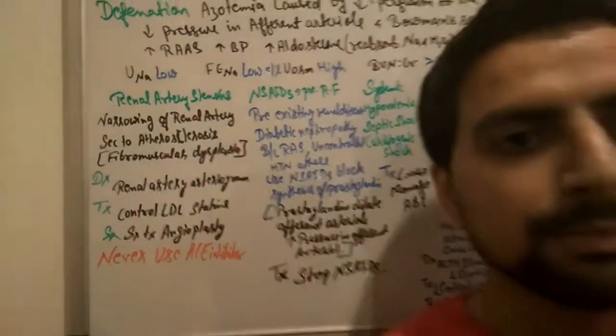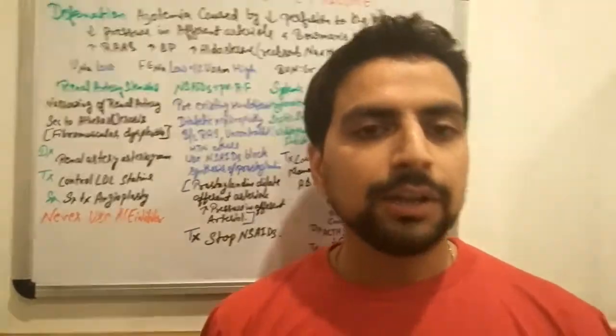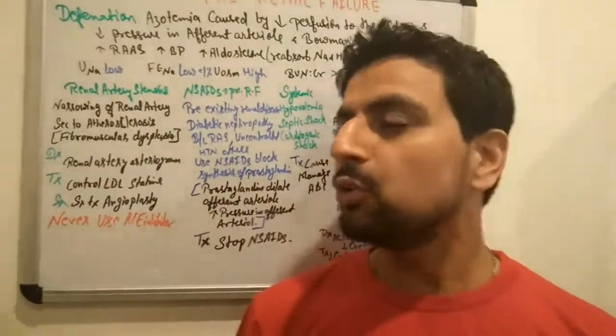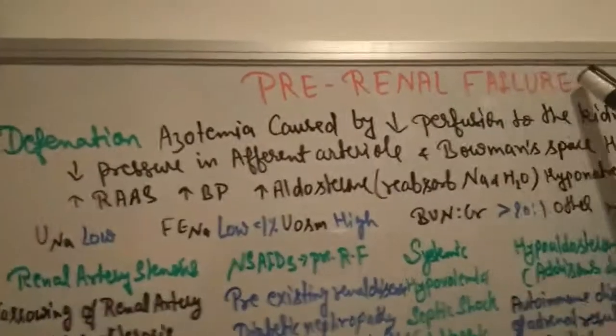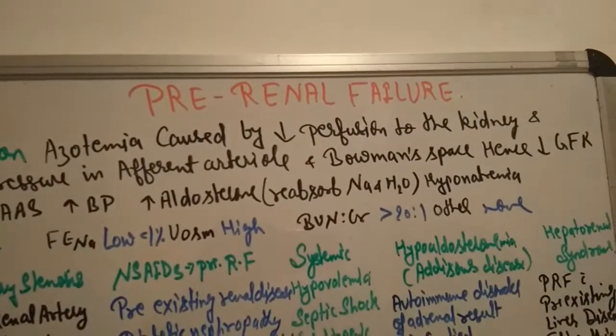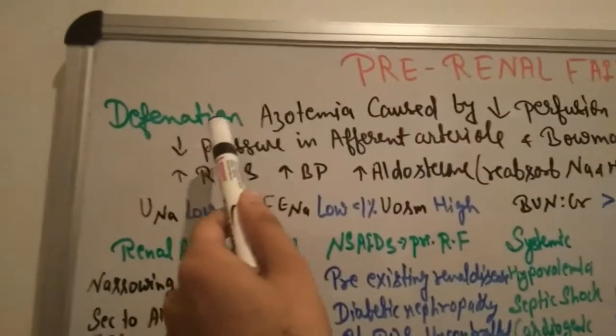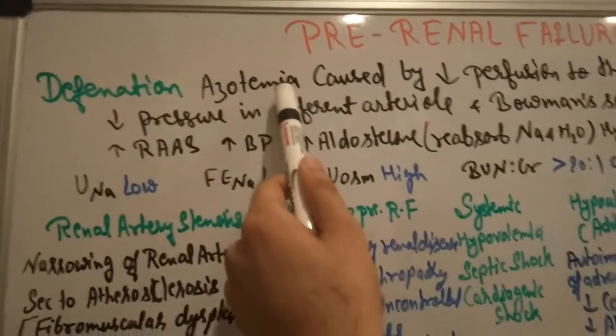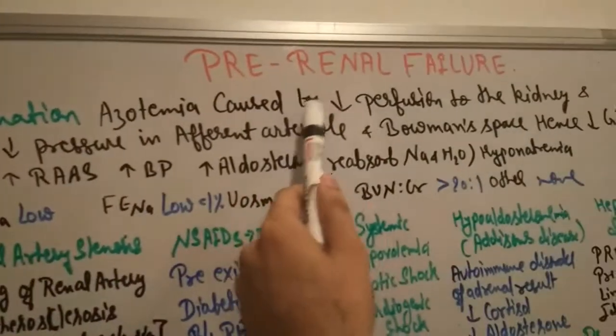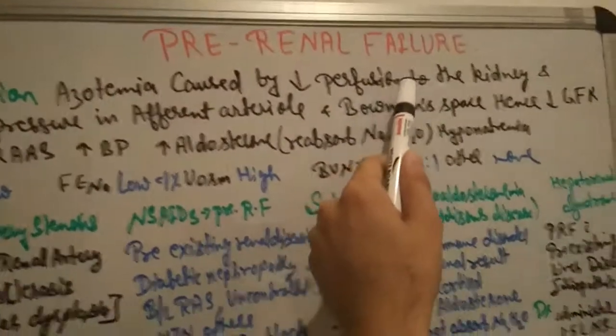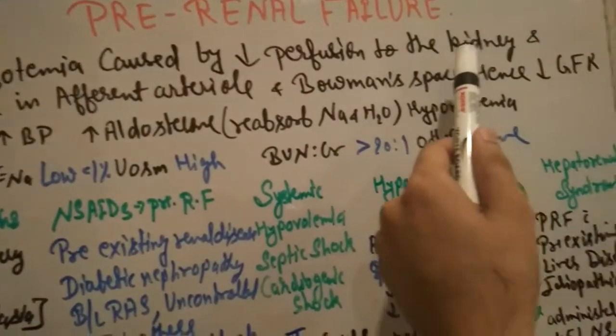Good evening doctors. I'm Dr. Himan Sharma and today I'm going to explain pre-renal failure. Its definition means azotemia caused by decreased perfusion to the kidney.